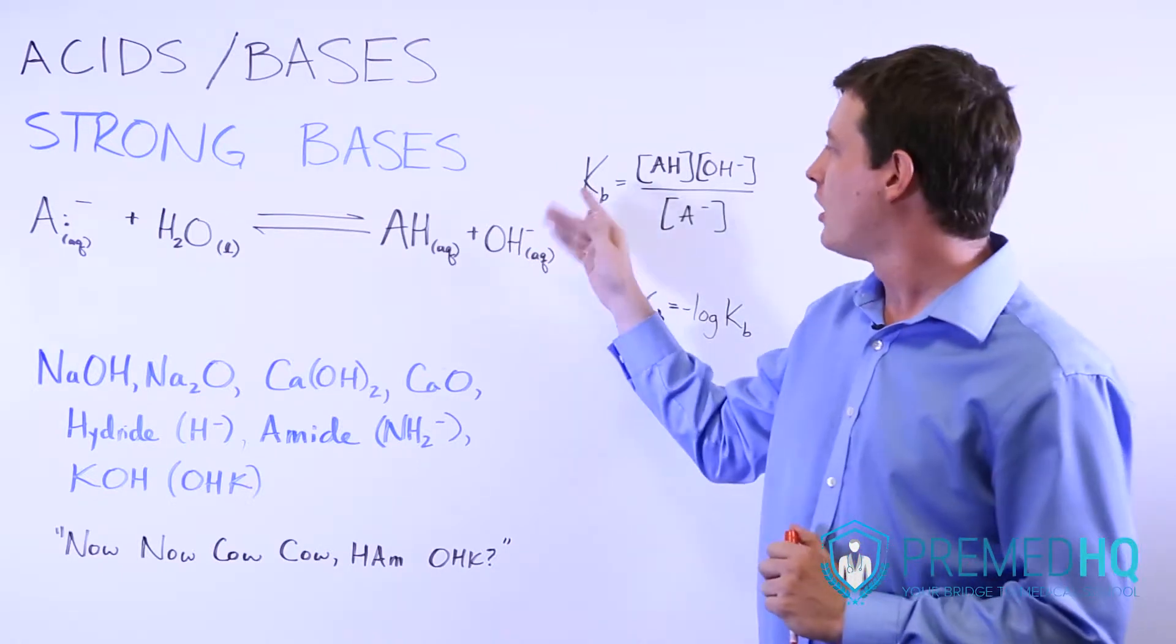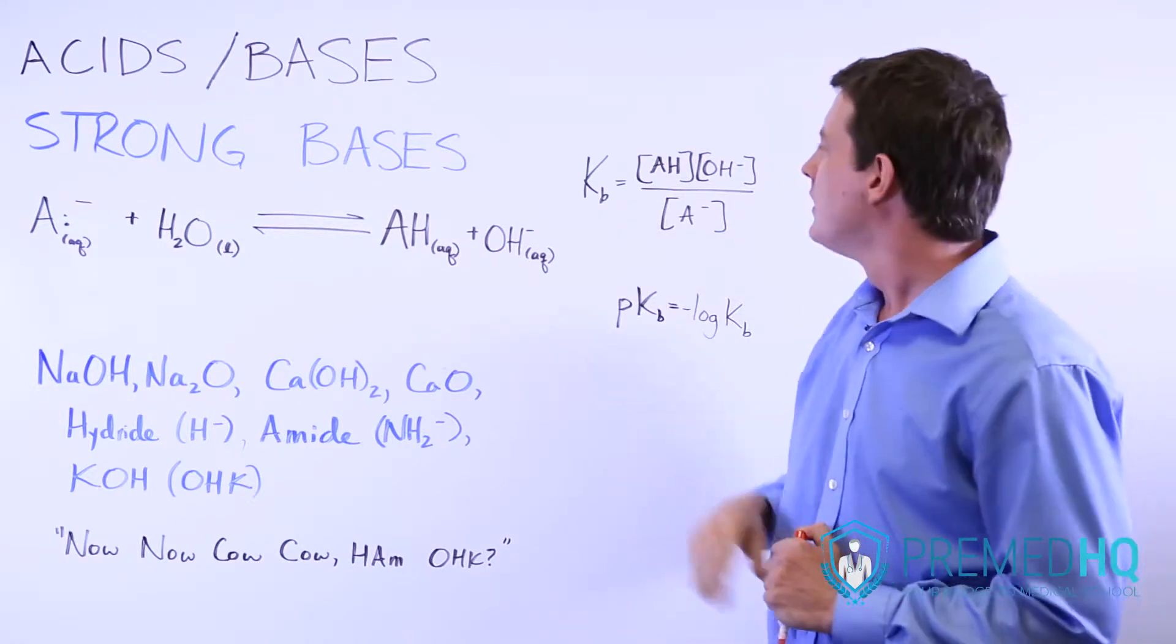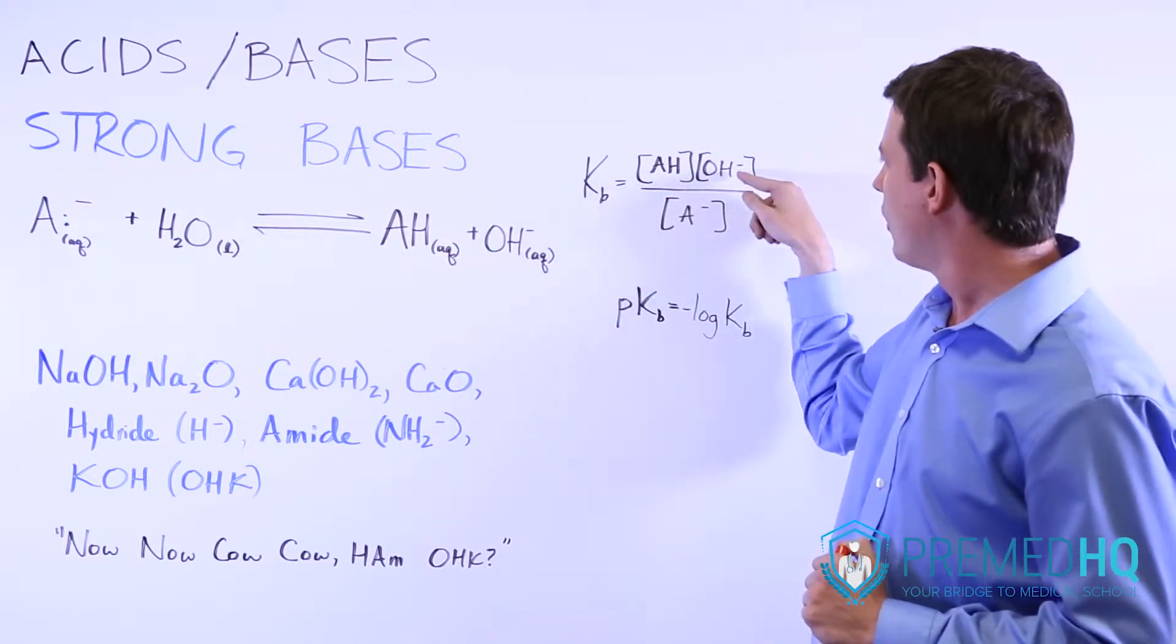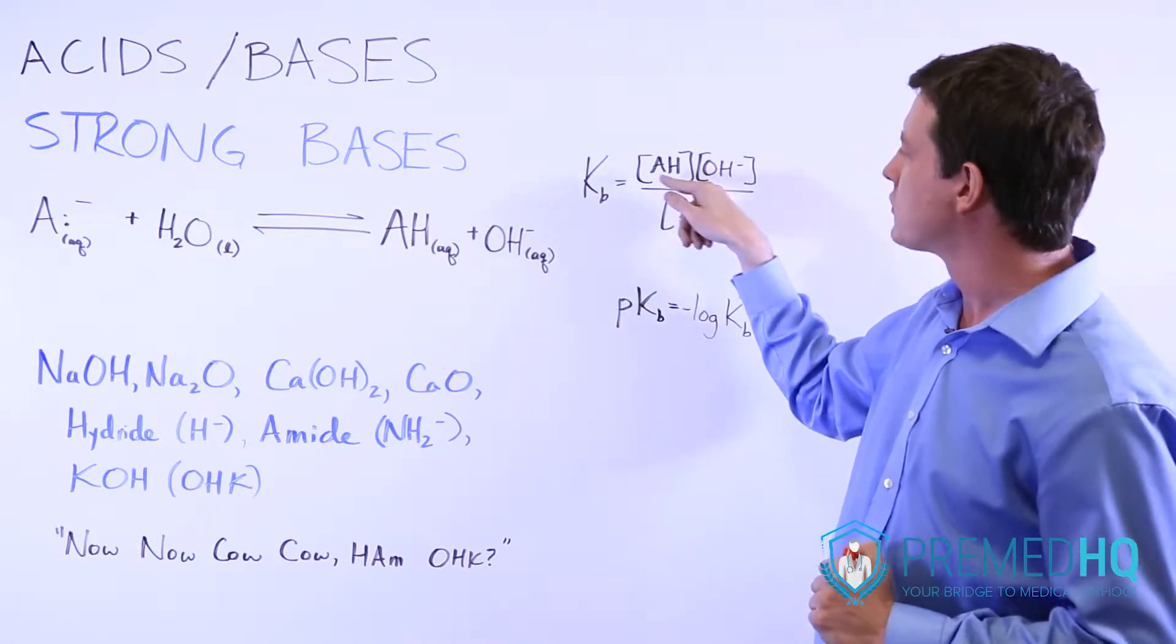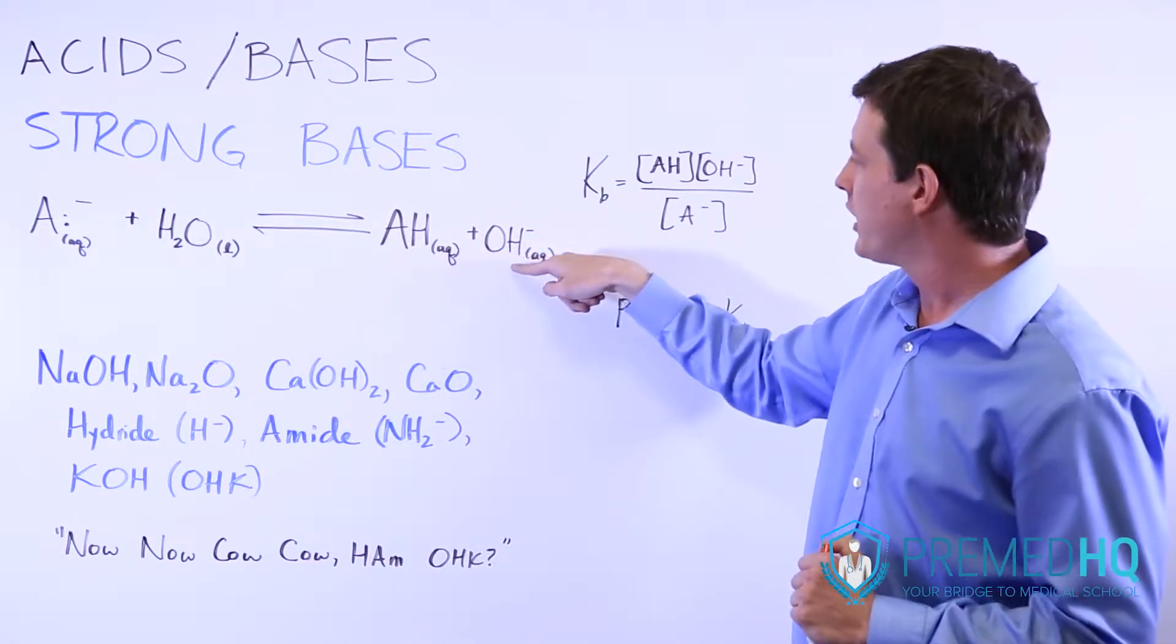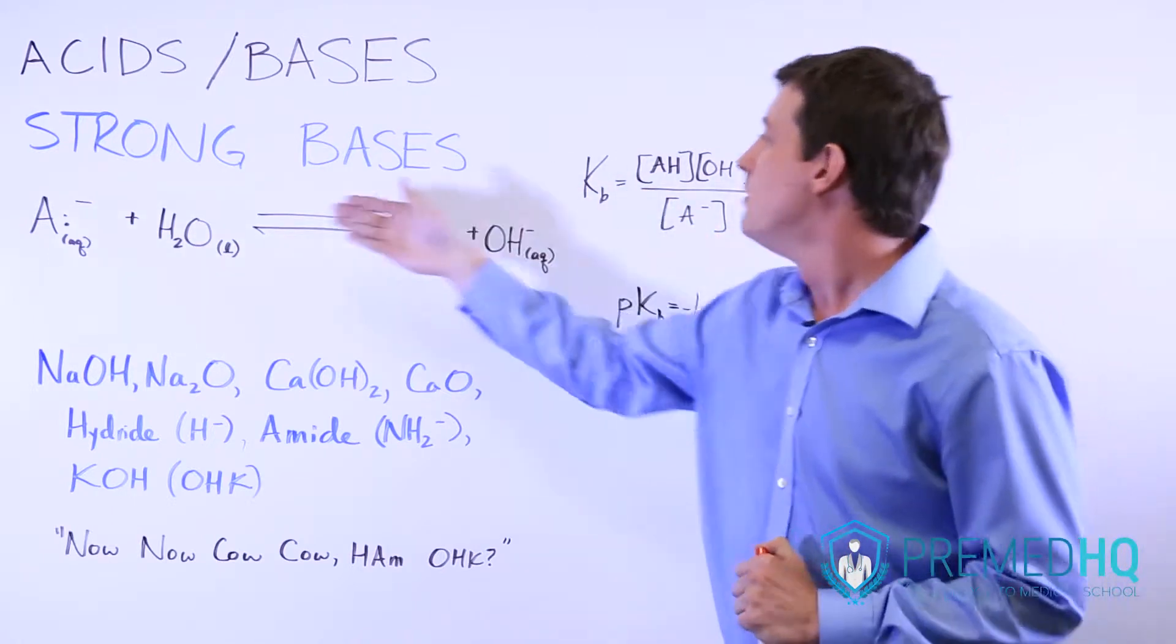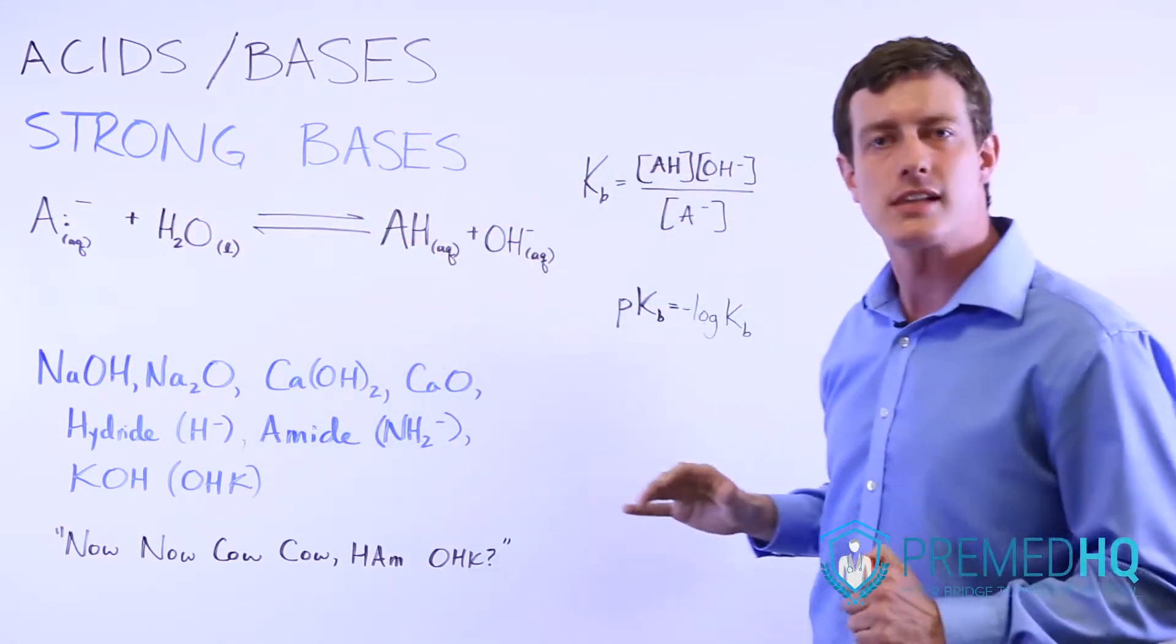And if we are to draw the KB, the base equilibrium constant for this, that will be represented as AH times OH minus over A minus. So it's the equilibrium concentration of how much protonated base you have, how much hydroxide ion you have, and then you divide that by the amount of the original base that exists at equilibrium.